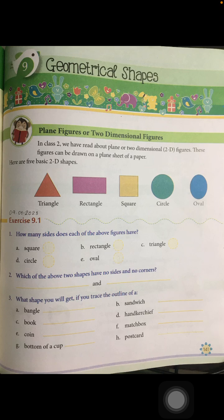The next question is: which of the above shapes have no sides and no corners? You know the answer — it's circle, which has no sides and no corners. The other one you are going to write is oval.